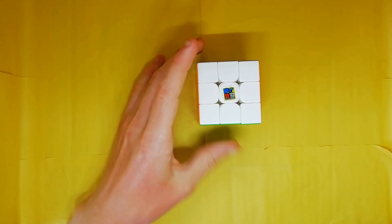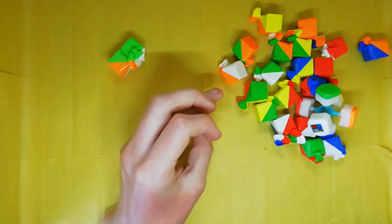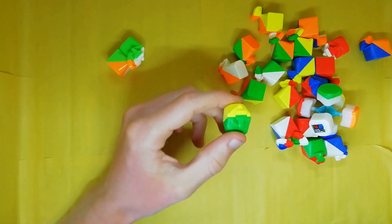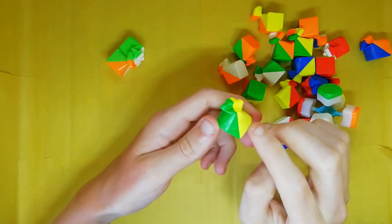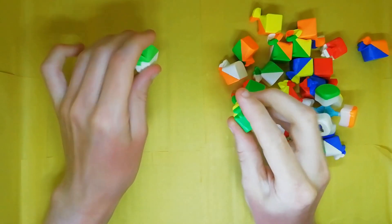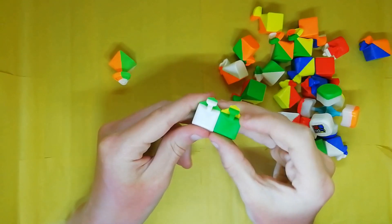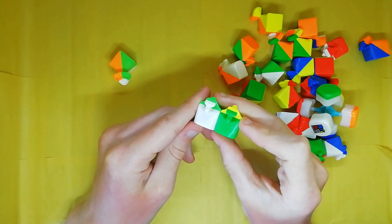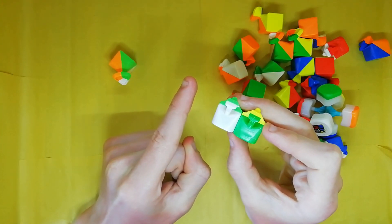So onto the mechanism I guess. So the mechanism is actually incredibly simple. It's just a simple piece design with a torpedo there, just exactly the same as the standard Meilong 3x3. They haven't changed almost anything.